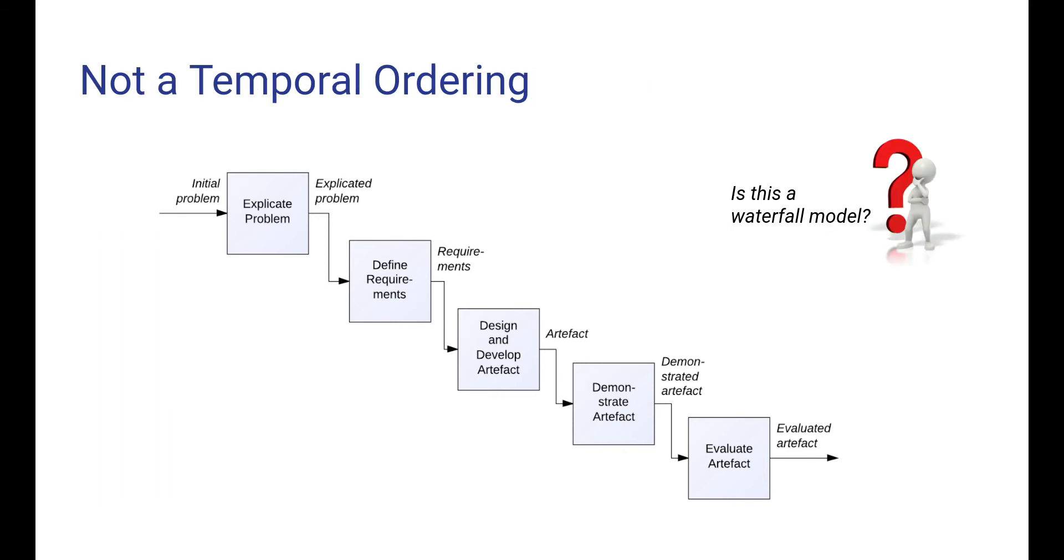Now this diagram of the design science research process may give rise to the question, is this just an ordinary waterfall model? The idea that you first carry out one activity completely, for example explicate problem, you produce a lot of documentation and then you leave it to the next activity define requirements, and then you go on to the next activity and so on, and then you stop at evaluate artifact.